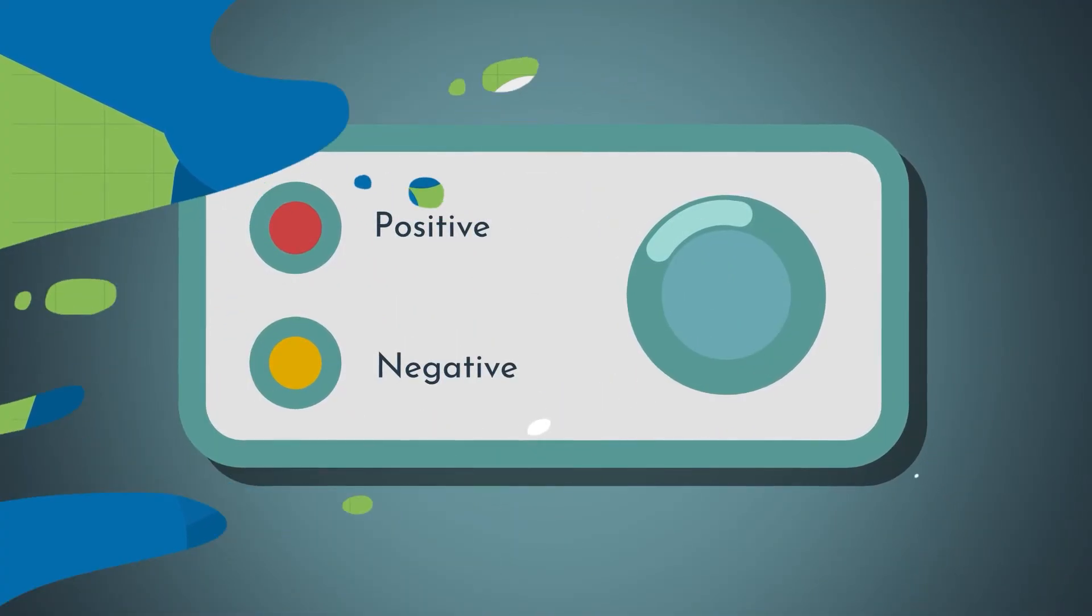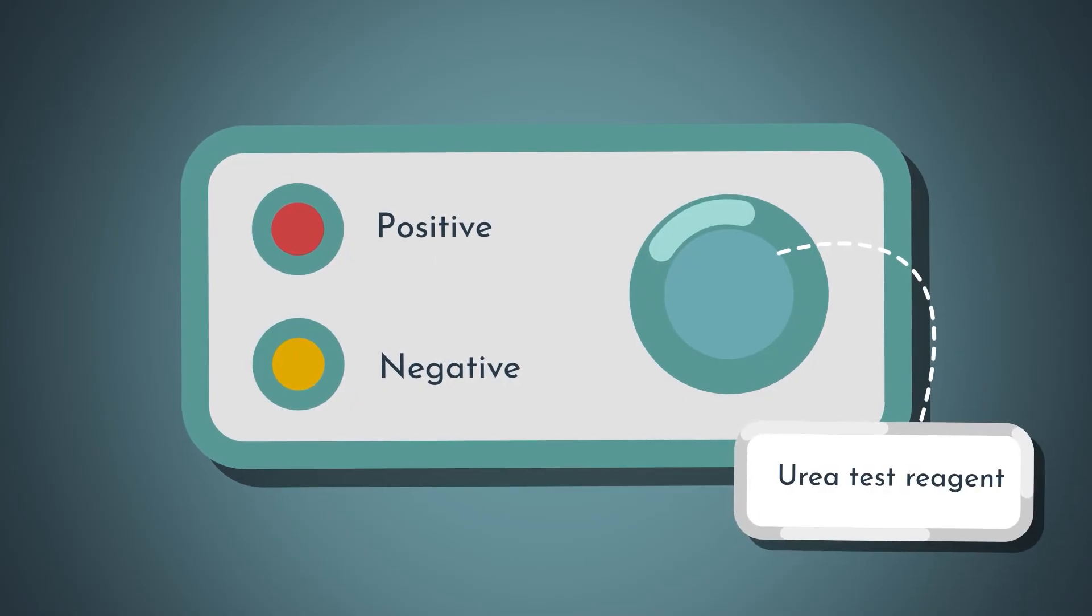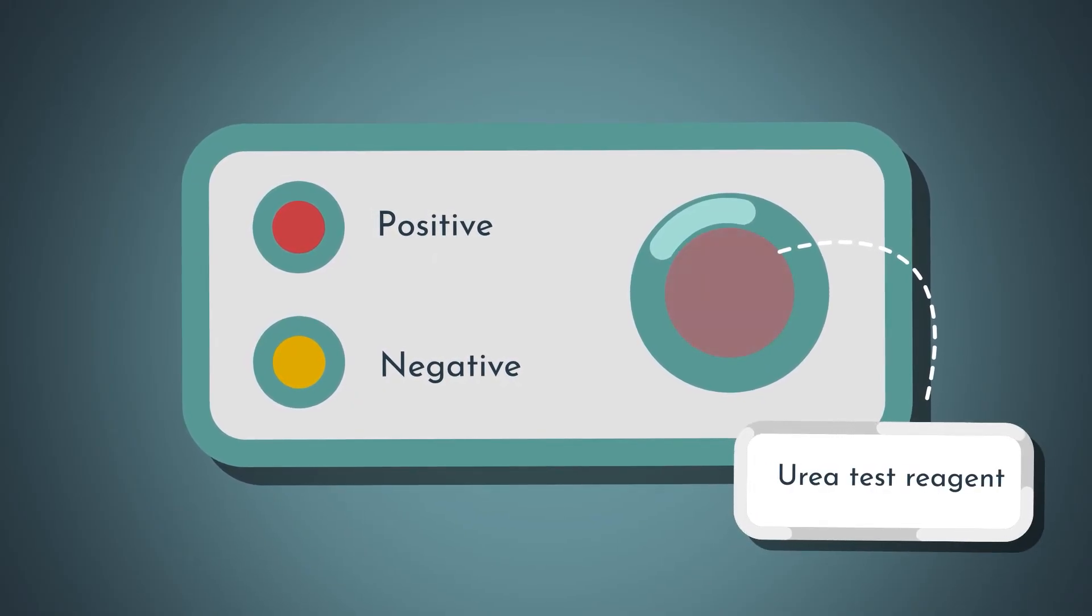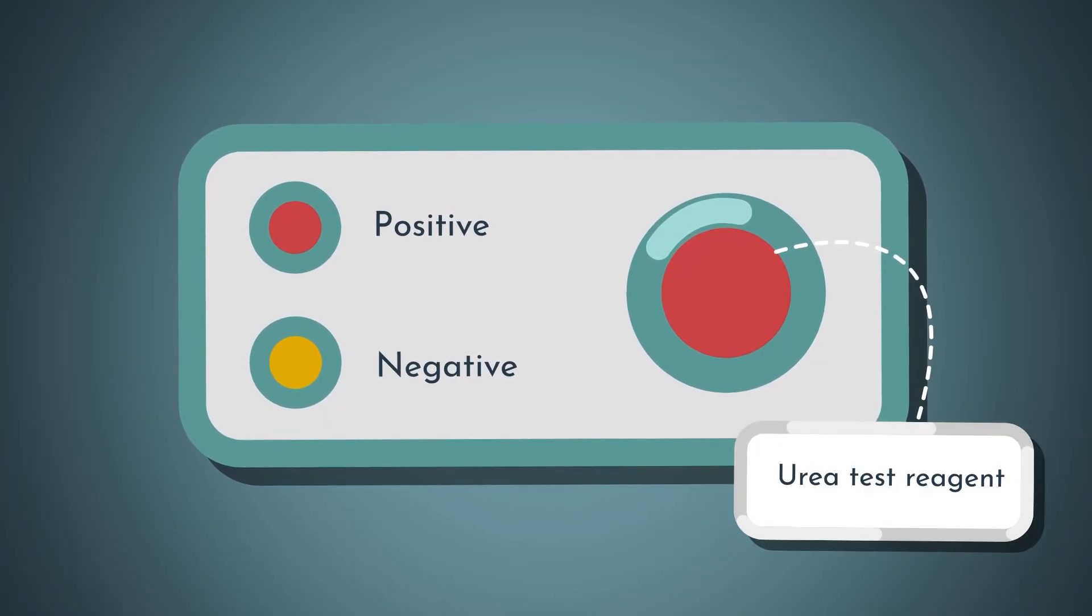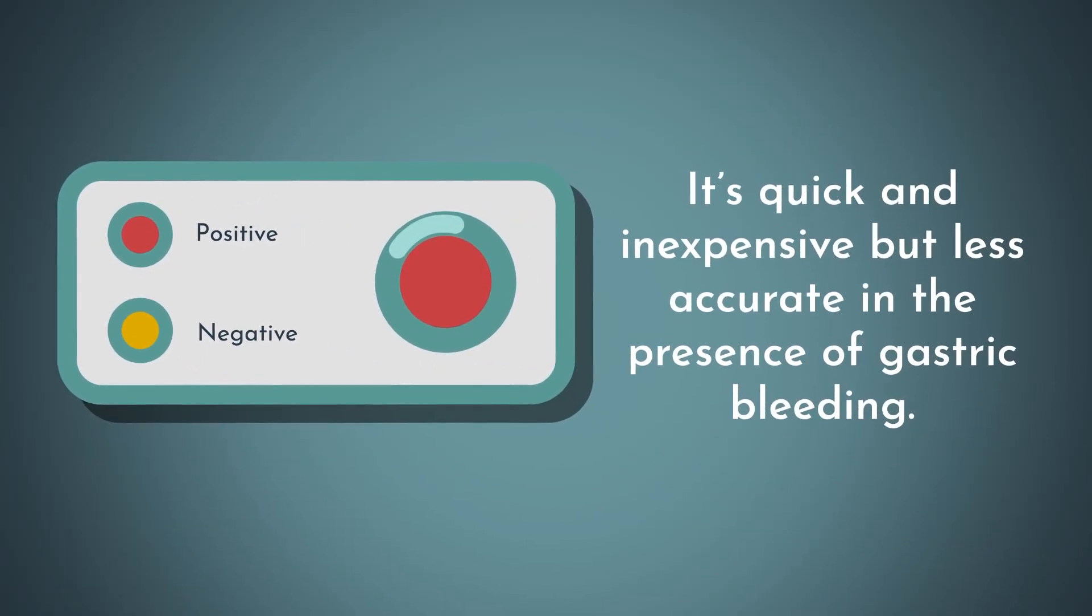The rapid urease test uses a urea test reagent that converts to ammonia in the presence of H. pylori, detected by a pH monitor. It's quick and inexpensive, but less accurate in the presence of gastric bleeding.